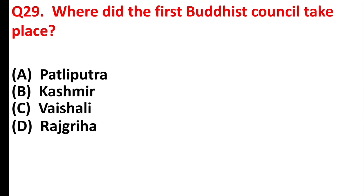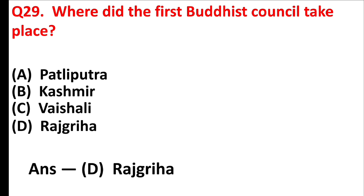Where did the first Buddhist council take place? Answer is Option D: Rajgriha.